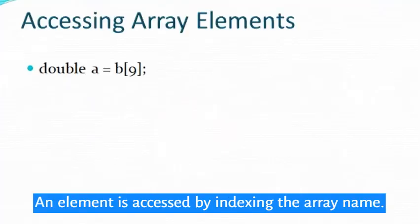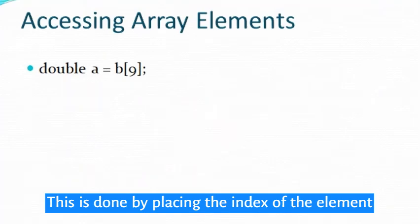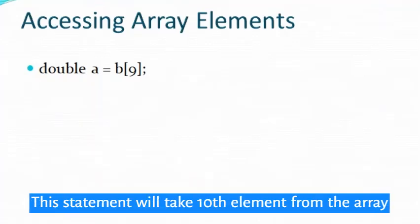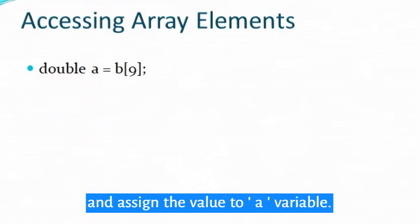An element is accessed by indexing the array name. This is done by placing the index of the element within square brackets after the name of the array. This statement will take tenth element from the array and assign the value to a variable.